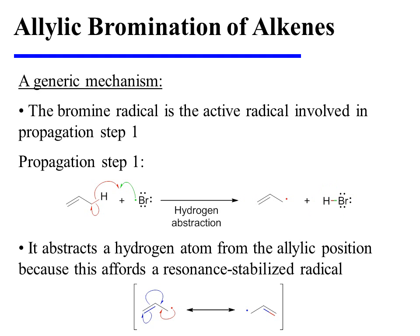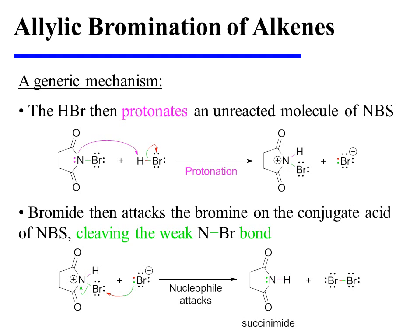It's important to note that the allylic radical enjoys resonance stabilization. The HBr produced in propagation step 1 then protonates an unreacted molecule of NBS. Bromide then attacks the bromine atom on the conjugate acid of NBS, thereby cleaving the weak N-Br bond. This yields succinamide, a byproduct of the reaction, as well as bromine, which will be needed for propagation step 2.